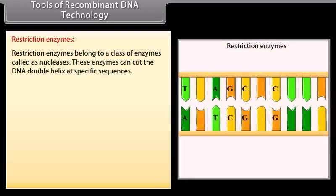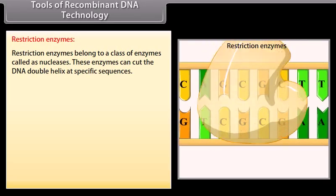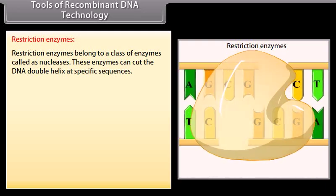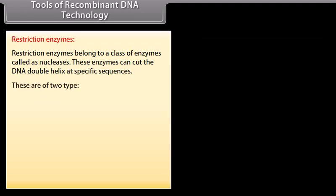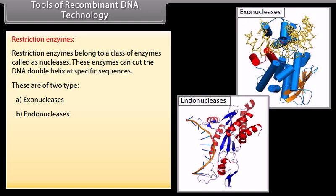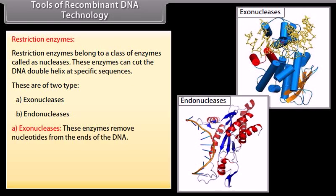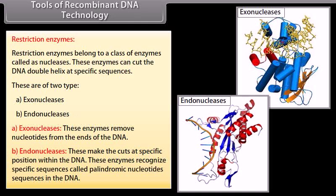Tools of recombinant DNA technology — Restriction enzymes. Restriction enzymes belong to a class of enzymes called nucleases. These enzymes can cut the DNA double helix at specific sequences. These are of two types: exonucleases and endonucleases. Exonucleases remove nucleotides from the ends of the DNA. Endonucleases make cuts at specific positions within the DNA. These enzymes recognize specific sequences called palindromic nucleotide sequences in the DNA.